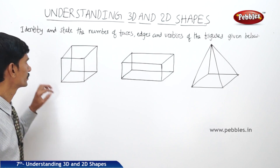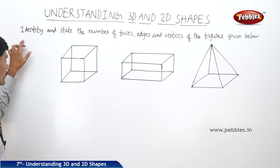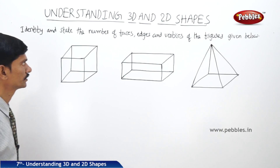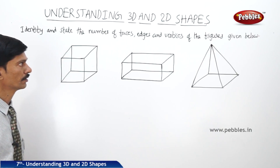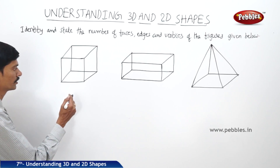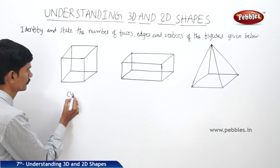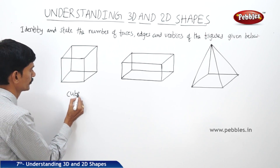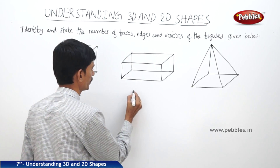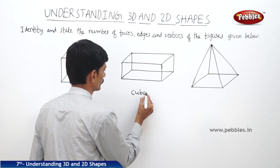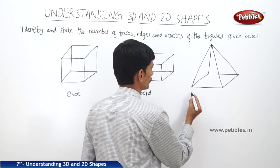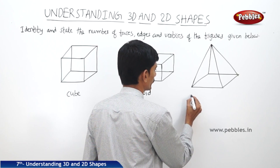Now let us see the next question: identify and state the number of faces, edges, and vertices of the figures given below. The first figure is a cube, the second figure is a cuboid, and the third figure is a square pyramid.